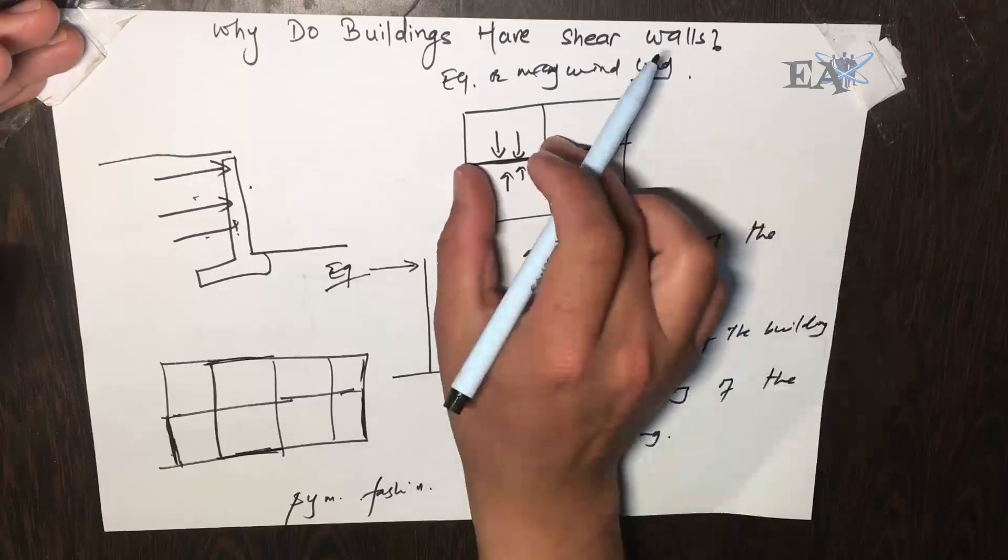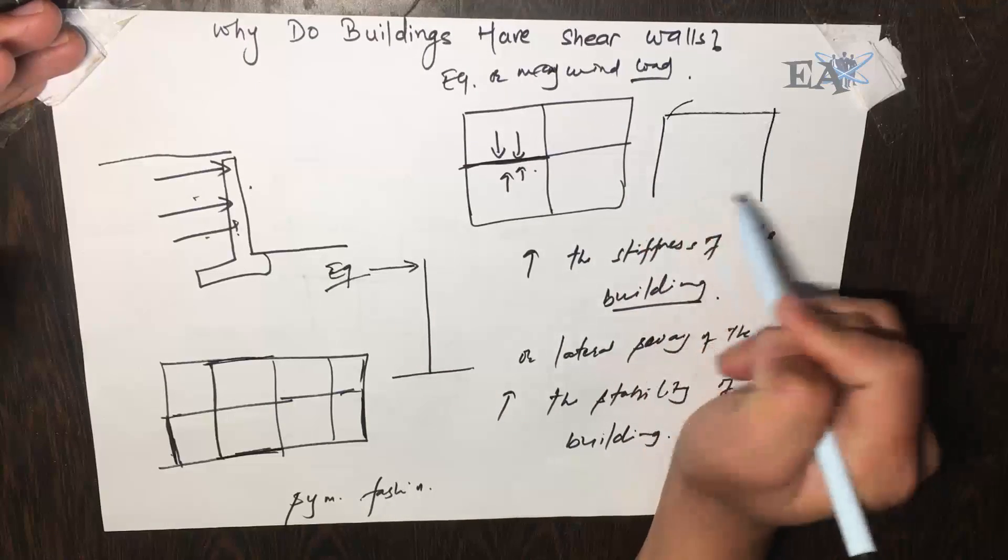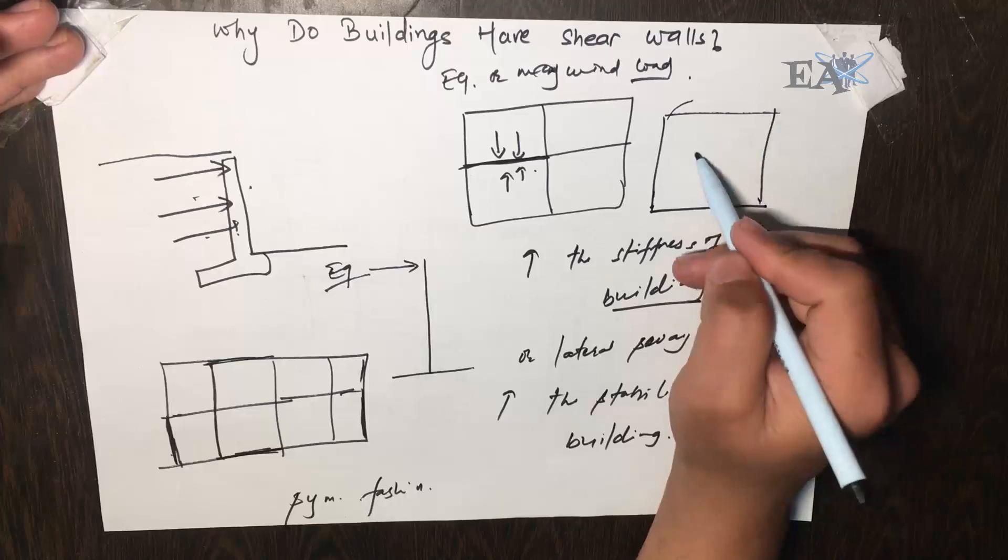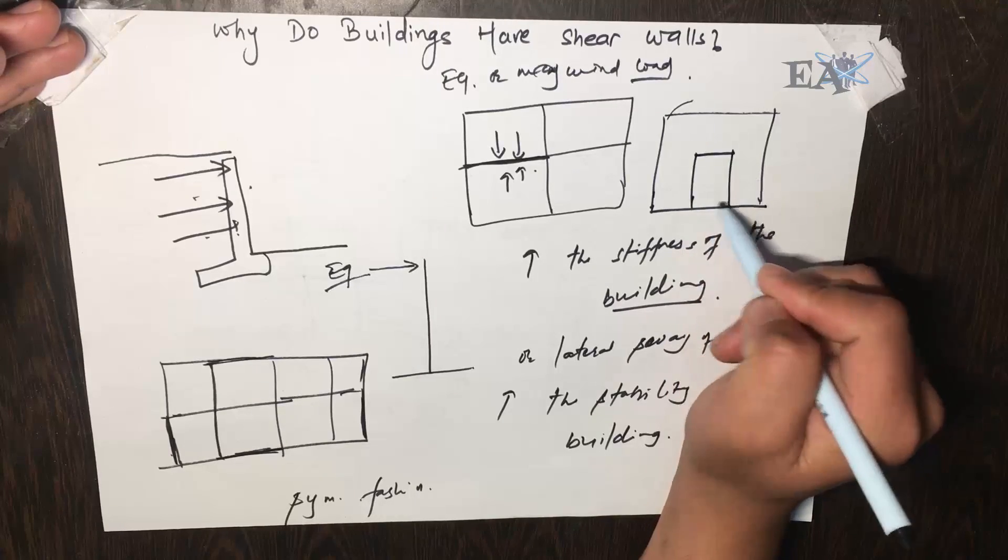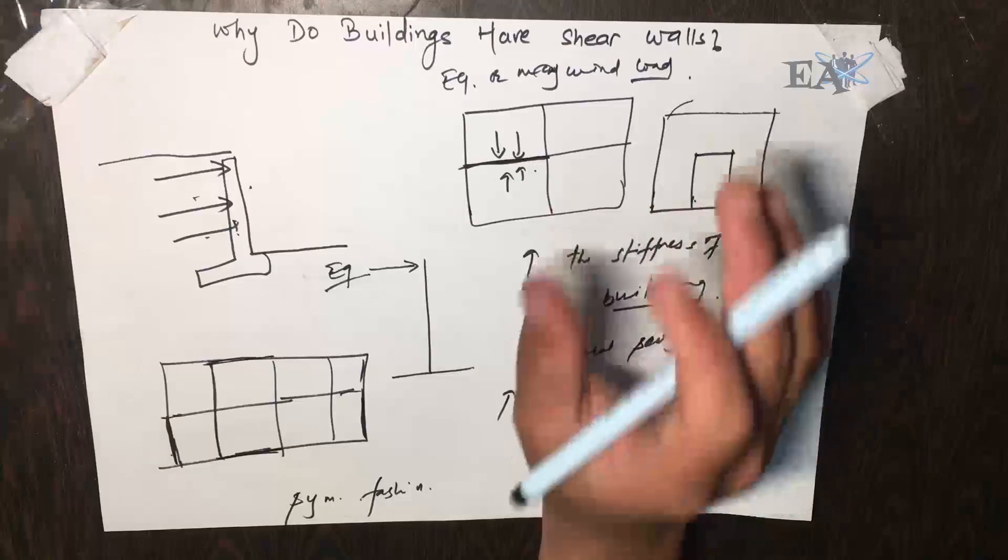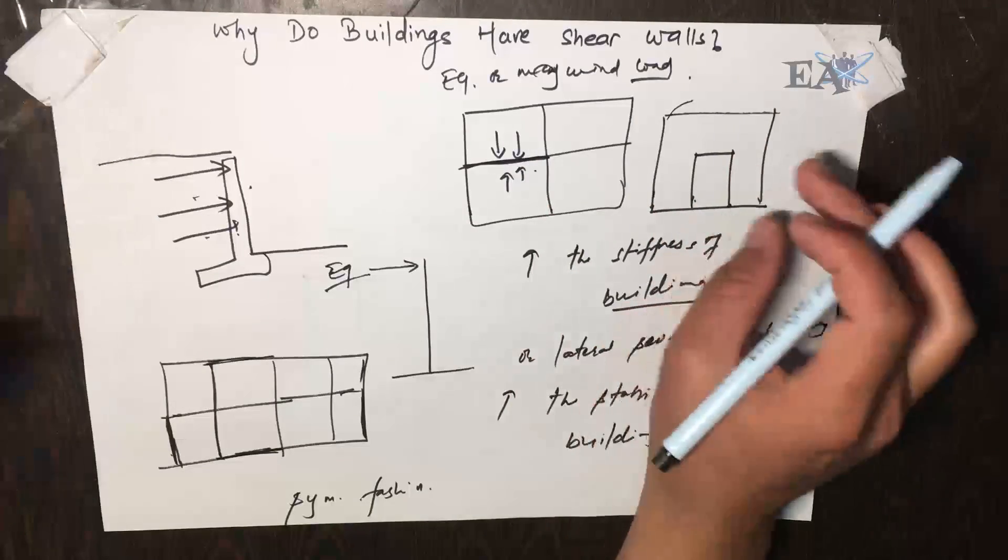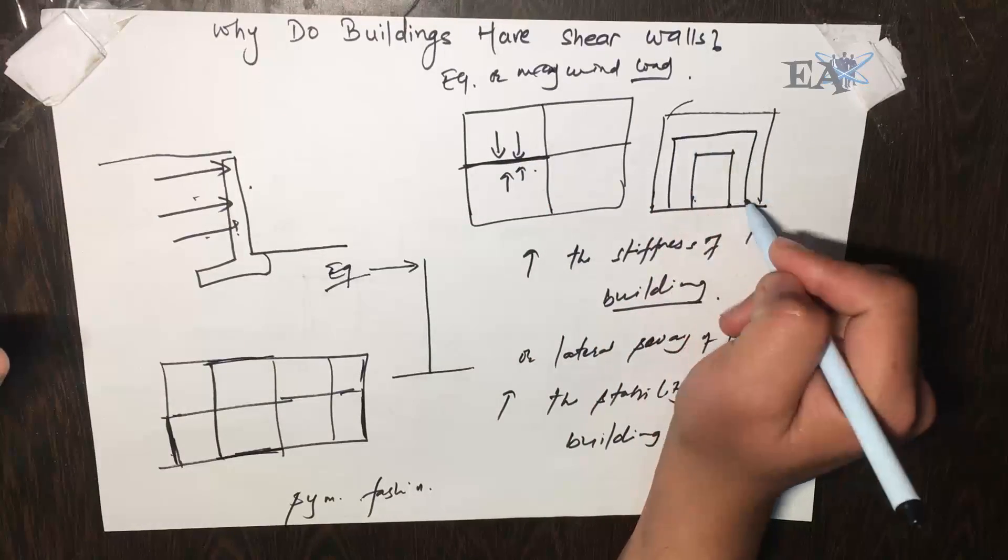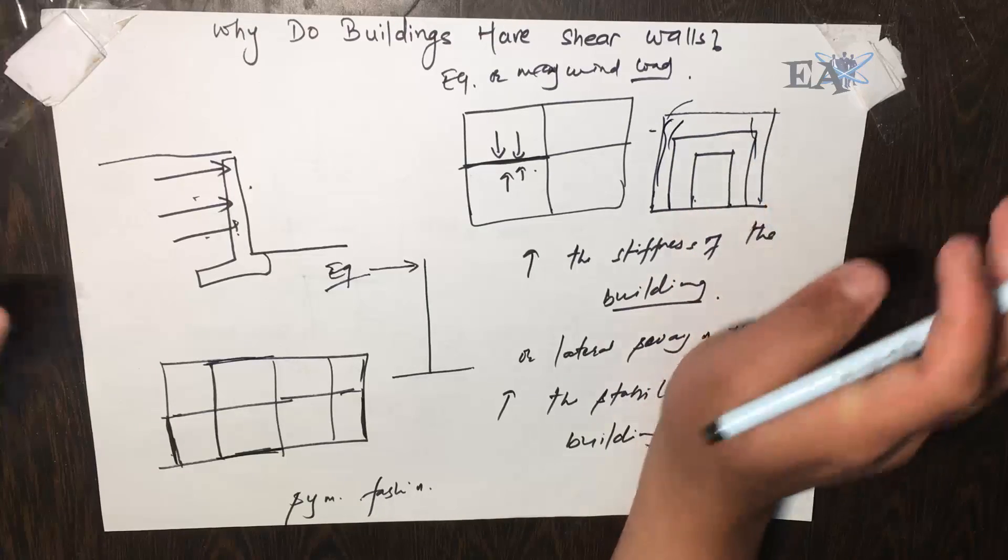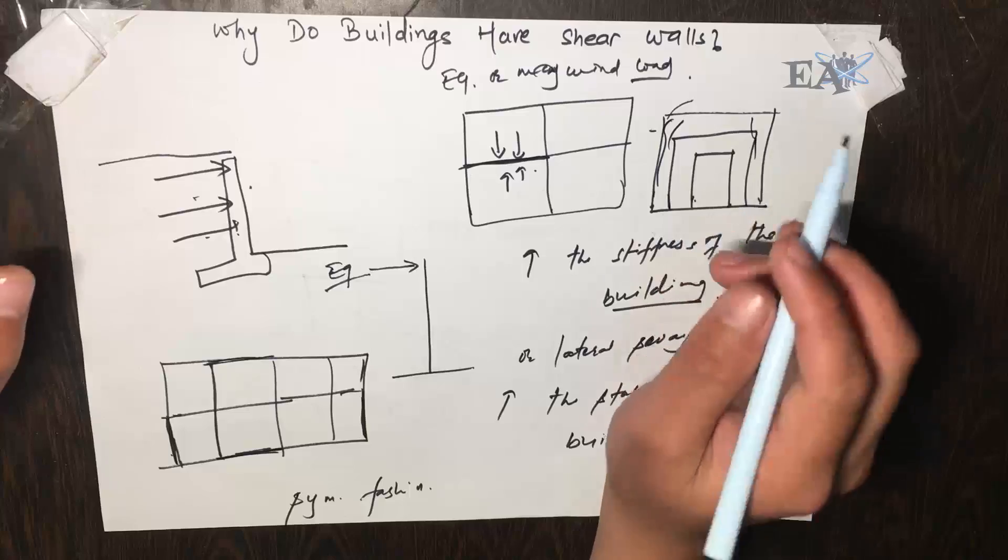You can have openings in these shear walls. If you see the elevation of this portion, this is your wall and suppose that you need to put a door over here, then you can have a door here. But the openings in the shear wall must be as small as they can be, because this will interrupt the flow of force in these walls.